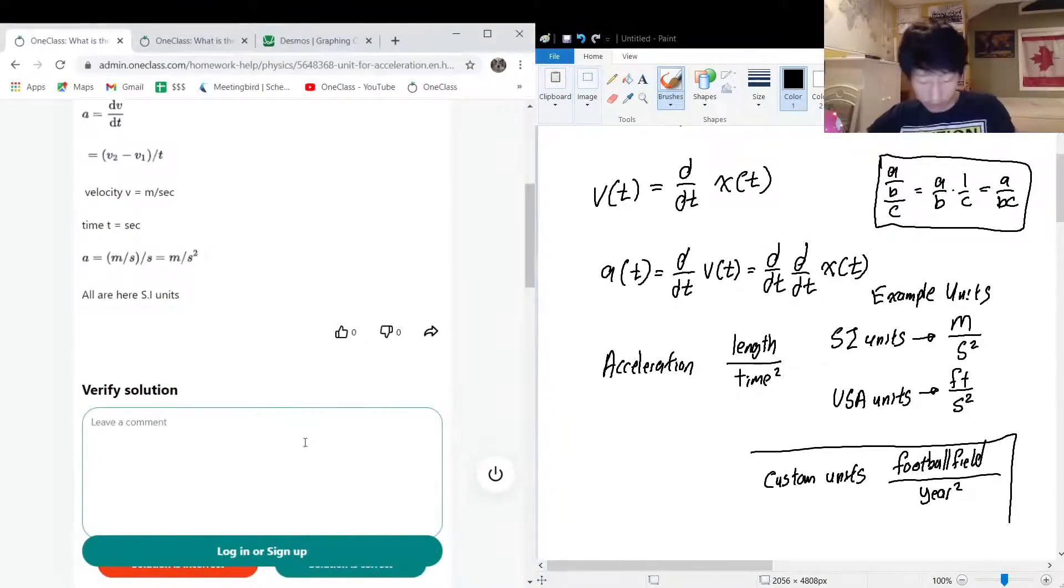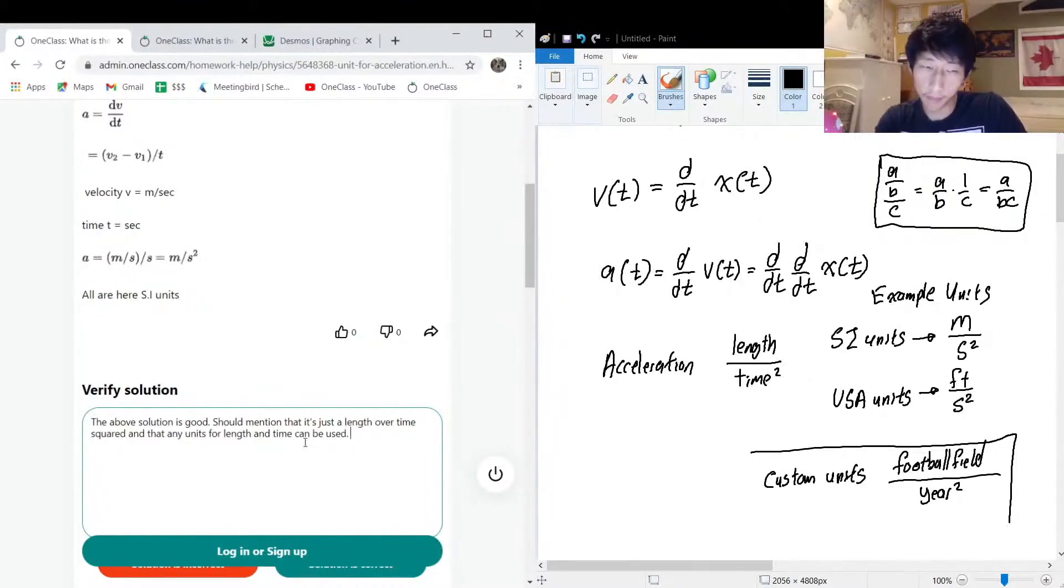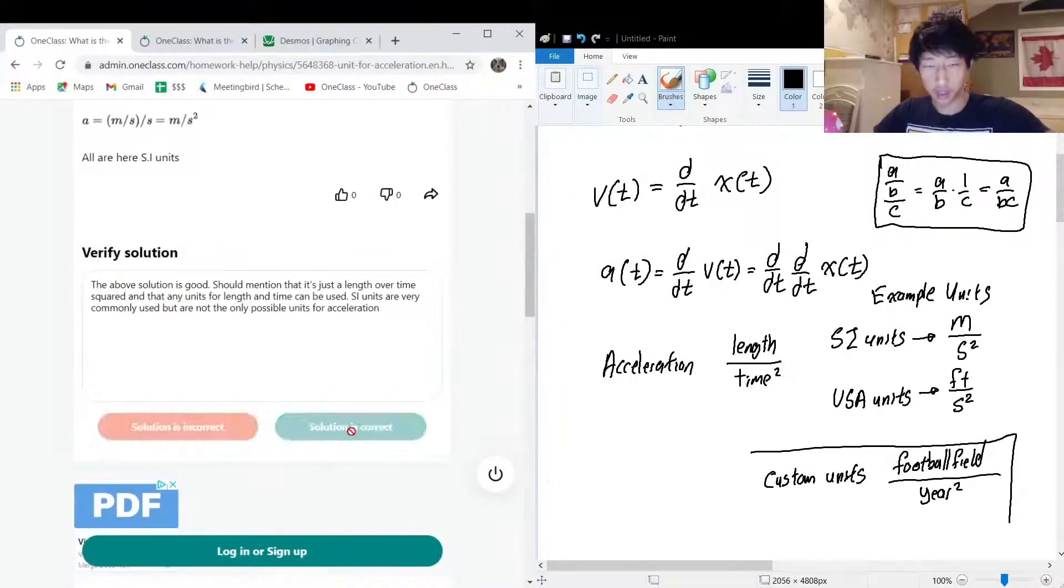Okay, so the above solution should mention that it's just a length over time squared, and that any units for length and time can be used. SI units are very commonly used but are not the only possible units for acceleration.